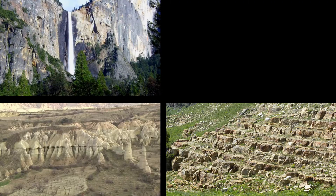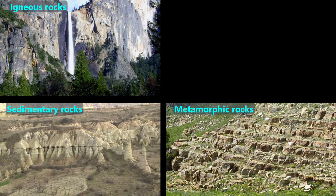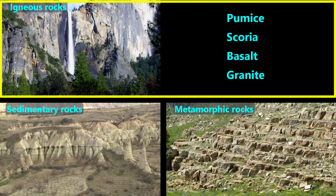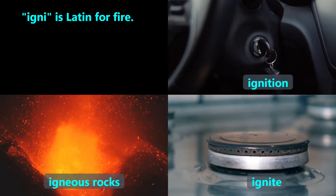Although there are many specific types of rocks that naturally form on Earth, geologists group these into one of three types – igneous rocks, sedimentary rocks, and metamorphic rocks. This video will focus on igneous rocks and we'll look at four common examples – pumice, scoria, basalt, and granite.